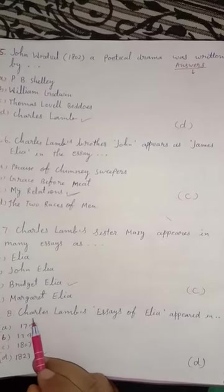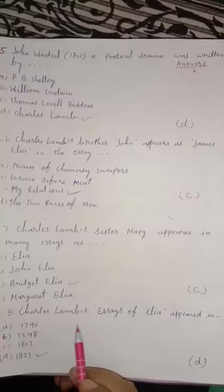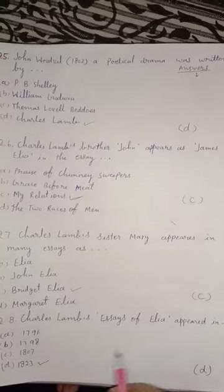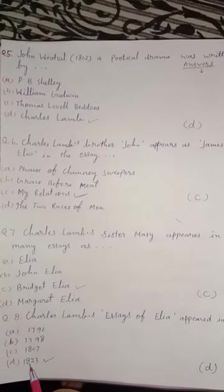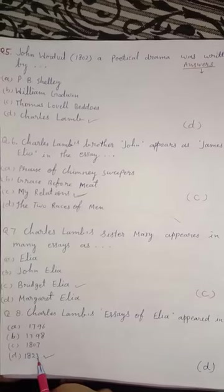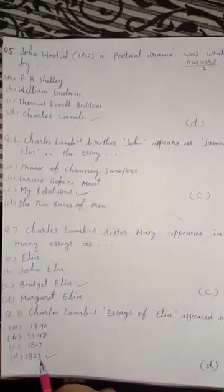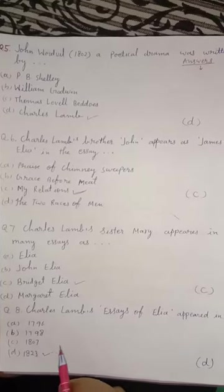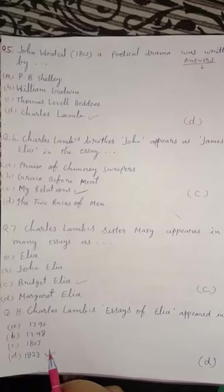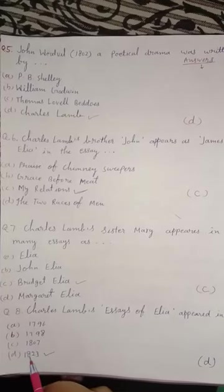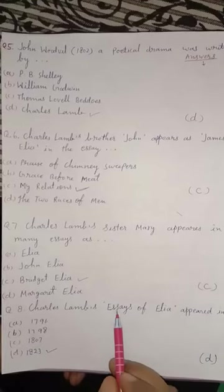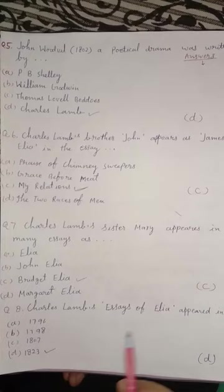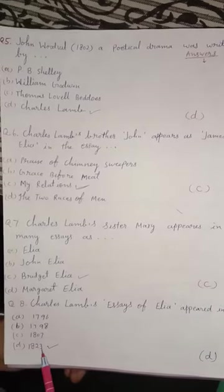Question 8. Charles Lamb's 'Essays of Elia' appeared in 1823. This is one of the most important questions regarding Charles Lamb. This famous 'Essays of Elia' was published in 1823.